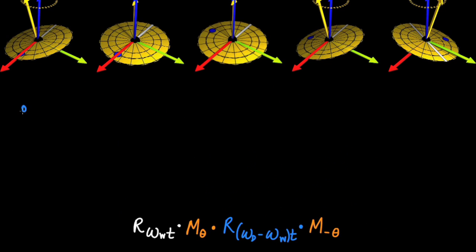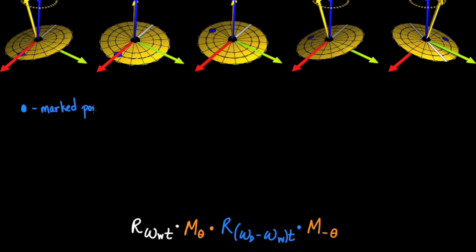Let's understand geometrically why this worked. The angle of the marker is changed in two steps of this process. First, a rotation by angle omega d minus omega w times t. Then, by an angle omega w times t.